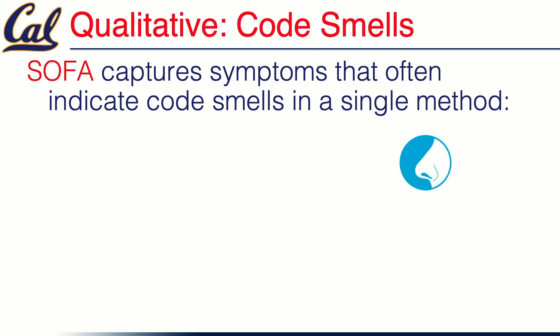Questions to ask when evaluating how good code is in an individual method: probably the most important one — and the one that gets violated if you don't do the others — is that a method should be short. It should be short enough to read. It used to be that the definition was the method should easily fit on one screen full, but that was when screens were only 24 lines by 80 characters. Today screens are enormously large, so we'll talk about quantitatively what you might look for.